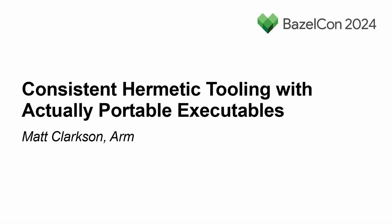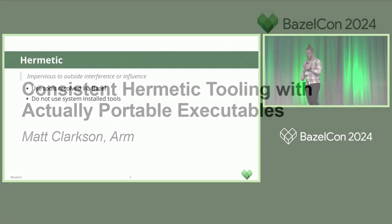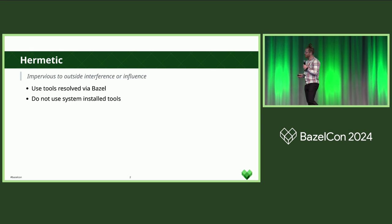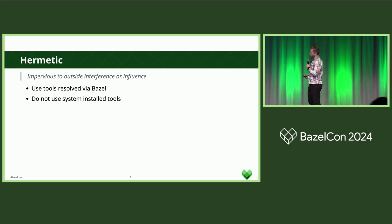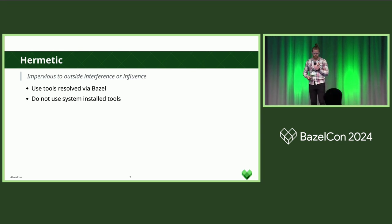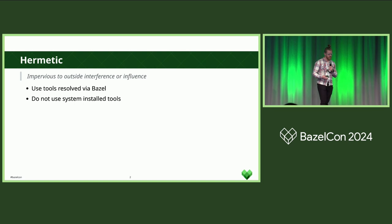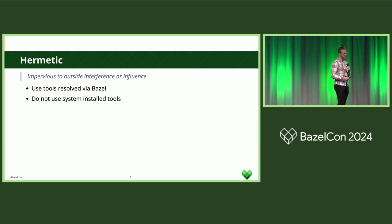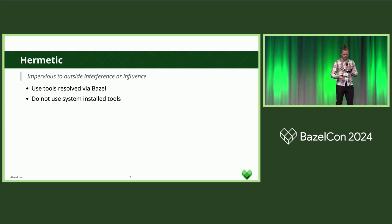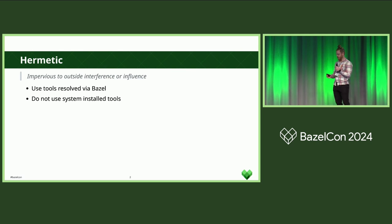We will be talking about APEs today. I am Matt Clarkson from Arm. We talk a lot about hermeticity in Bazel — that is, not using tools from the system. There are a lot of talks on hermeticity, so I am not going to go into that now. What I am going to go through is a bit of a story about what this means for you as a rule developer.